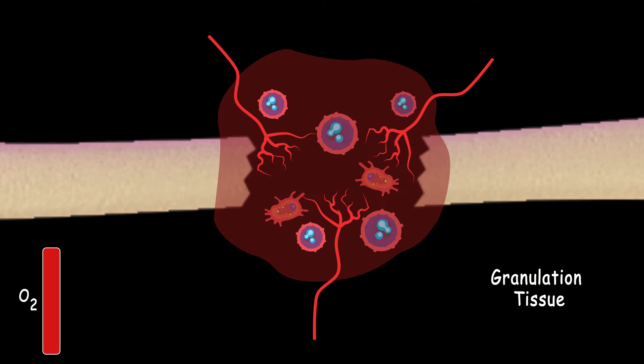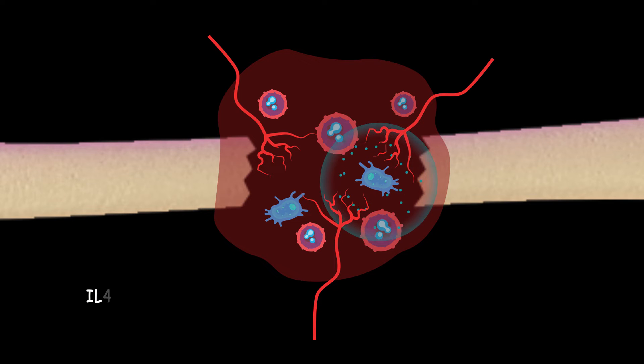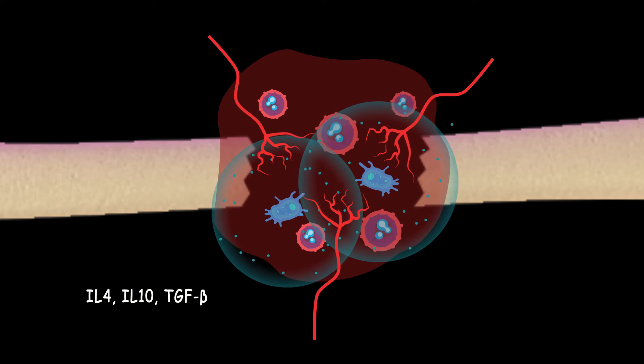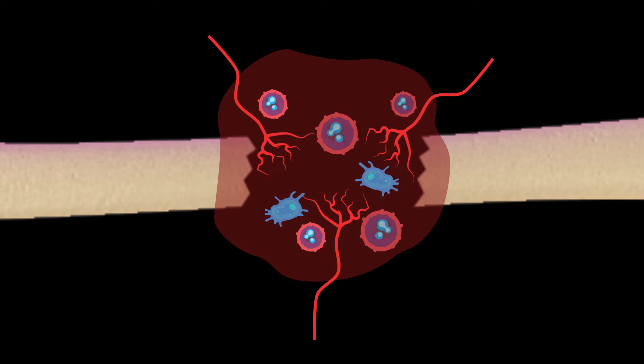Then M1 macrophages transform into the M2 types. They secrete anti-inflammatory cytokines such as interleukin-4, interleukin-10 and TGF-beta which start the repairing phase. After that, the fibroblasts activate and secrete a fibrous matrix that gradually replaces the granulation tissue.